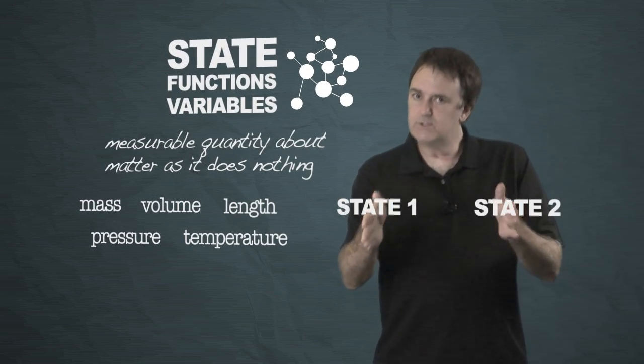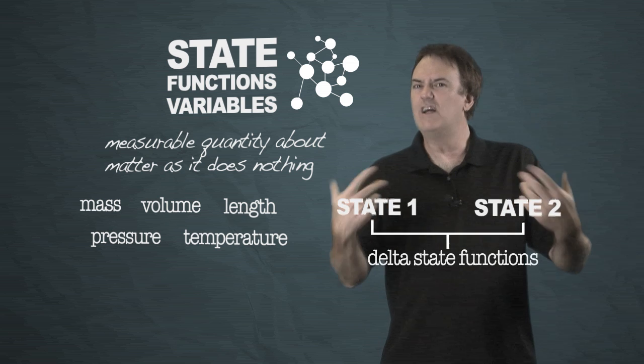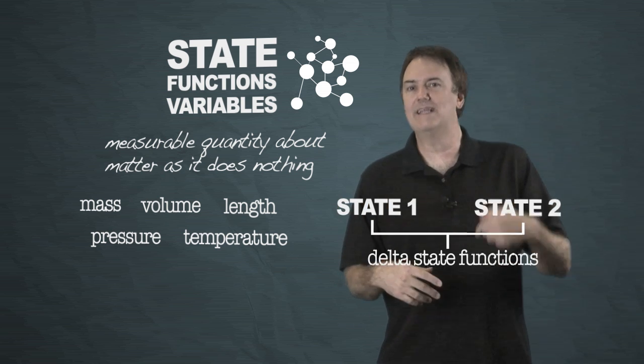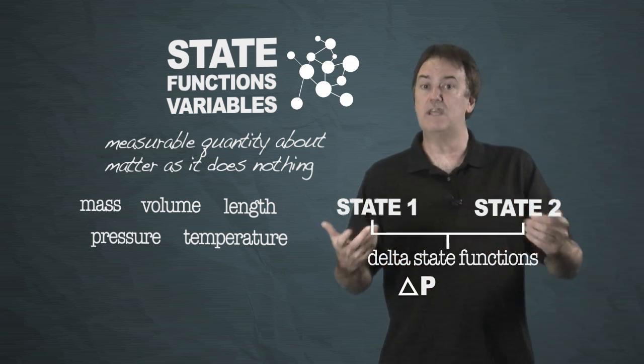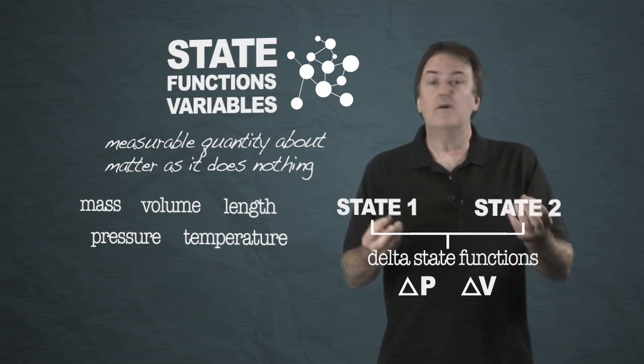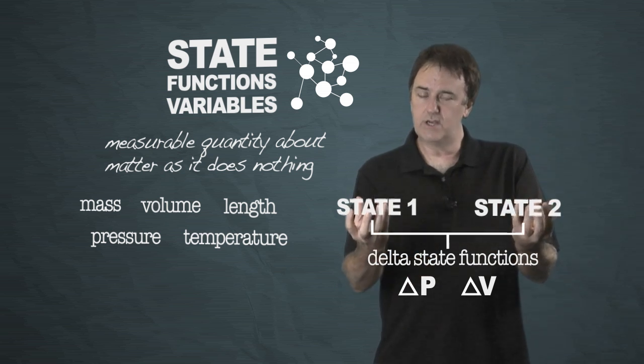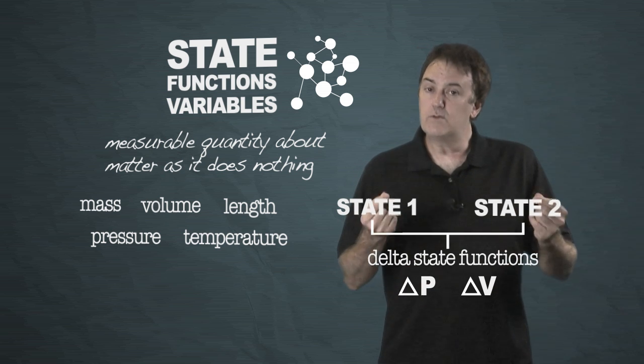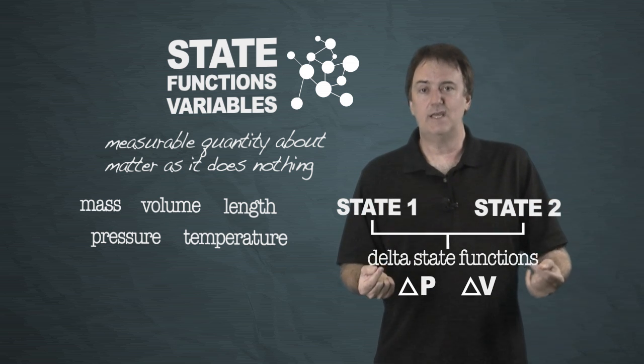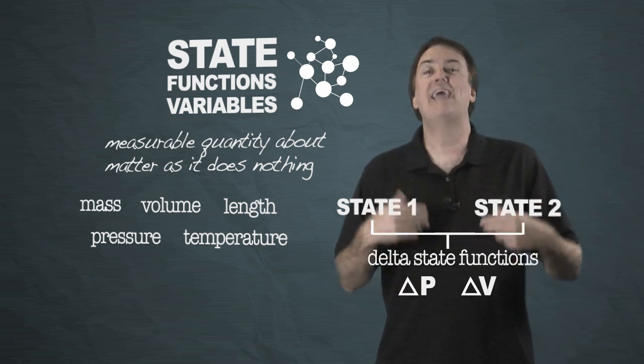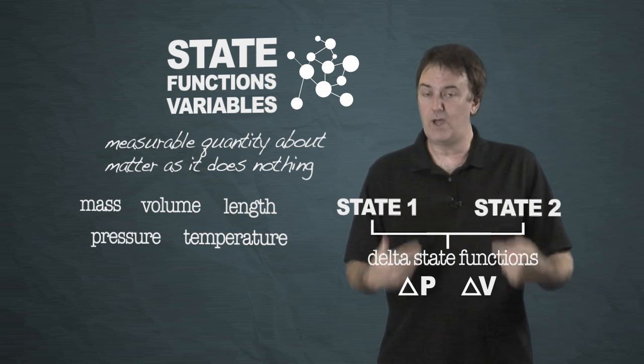The difference between state functions, which we call delta state functions, you'll see them like delta P for the change in pressure, delta V for change in volume. Those are simply a difference between what you measure here and what you measure here. Heat and work are path dependent. And so those will have to be calculated in a little bit different way.